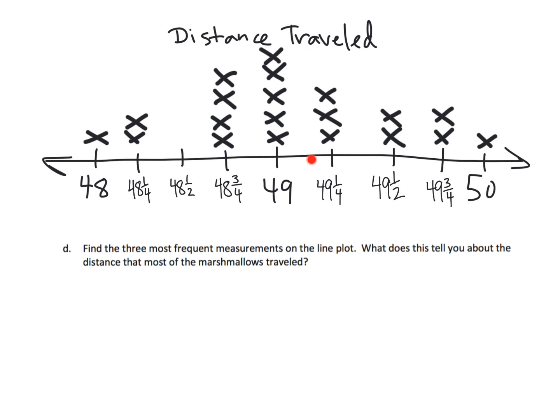And what does this tell you about the distance that most of the marshmallows traveled? Well, it tells you most of the marshmallows traveled around 49 inches. Or you could say most of the marshmallows traveled between 48 and three quarters and 49 and a quarter. So you have a variety of ways you could answer that question.